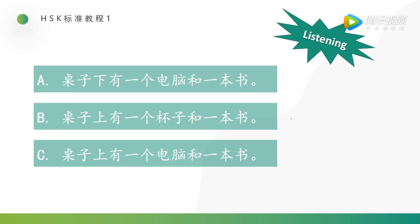Now let's do a listening practice. Please choose the sentence you hear. Are you ready? Listen: 桌子上有一个电脑和一本书. 桌子上有一个电脑和一本书.